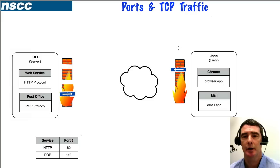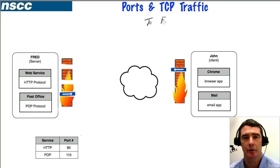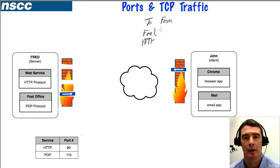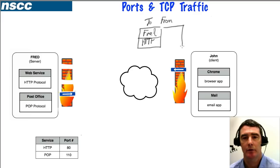John is going to create a packet. The addressing is the first part of the information, with a 'to' field and a 'from' field. The packet is addressed to Fred the server, specifically to the web service using the well-known port 80 for HTTP. That addressing information goes at the front of the packet, and it's coming from John.